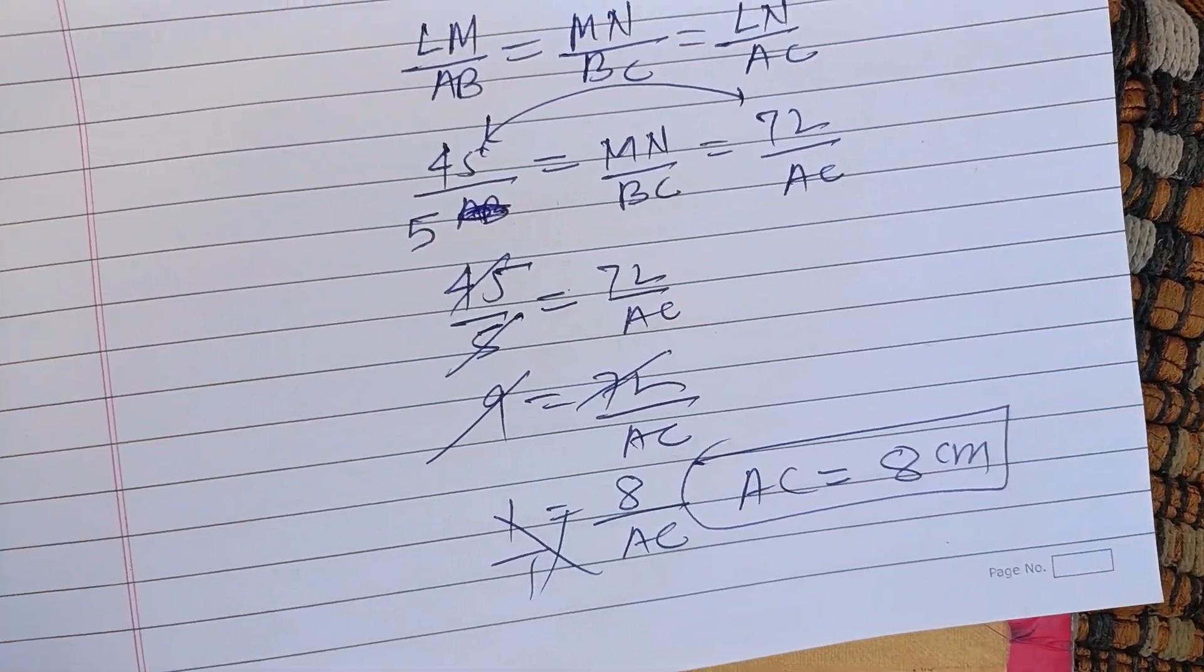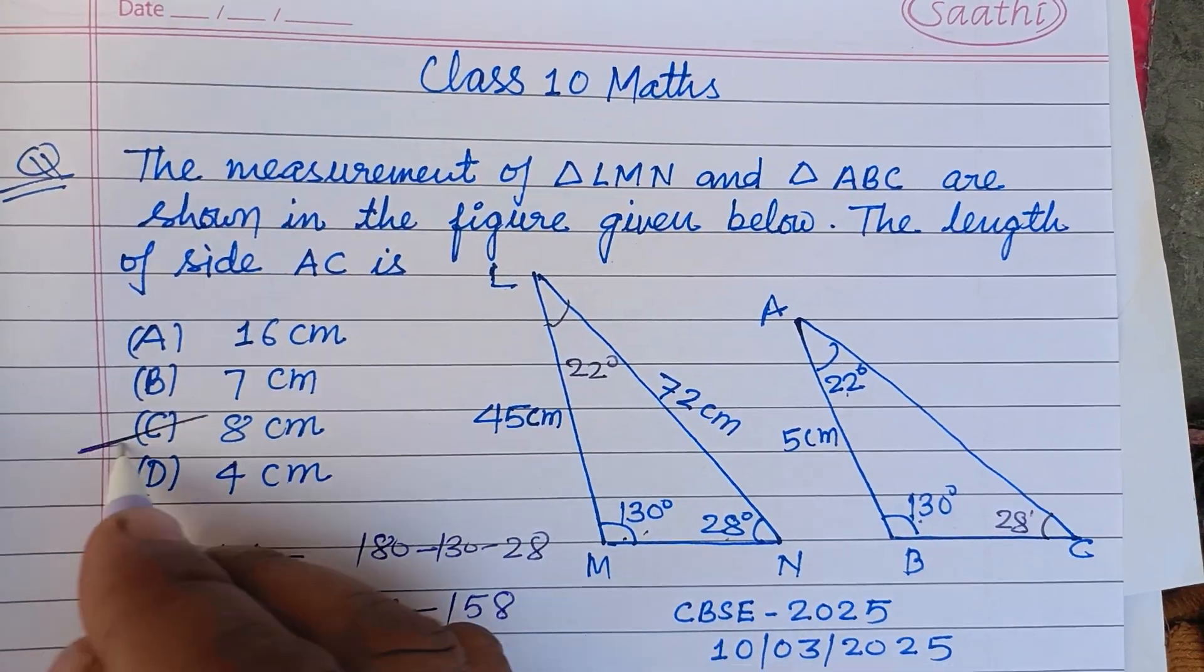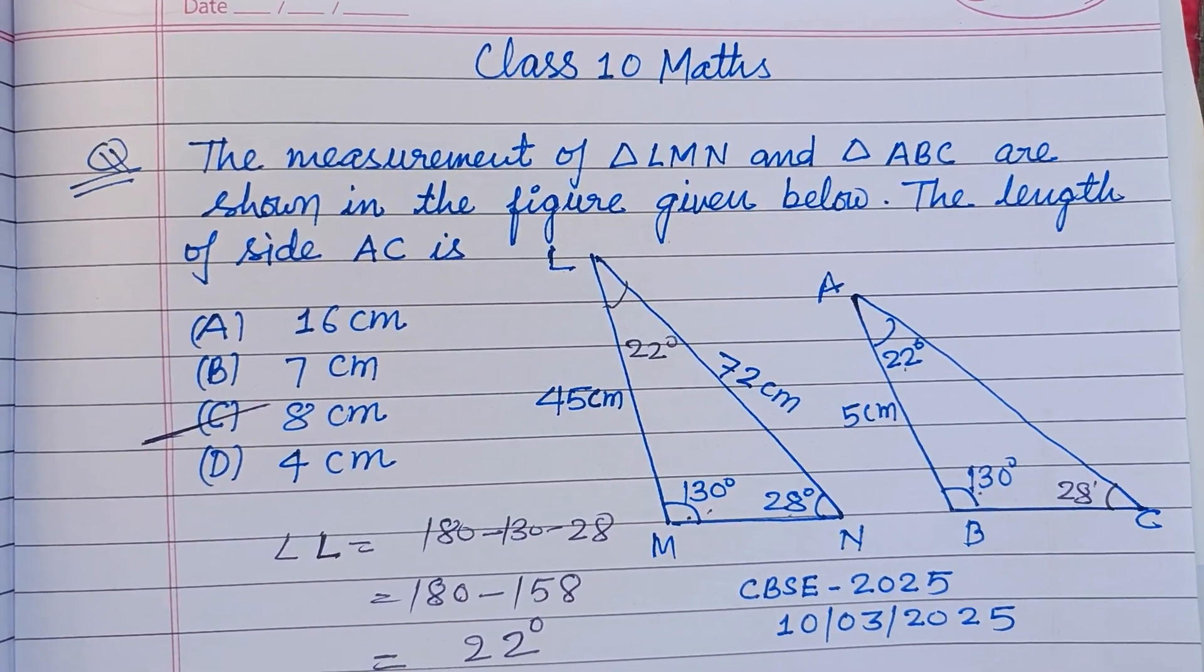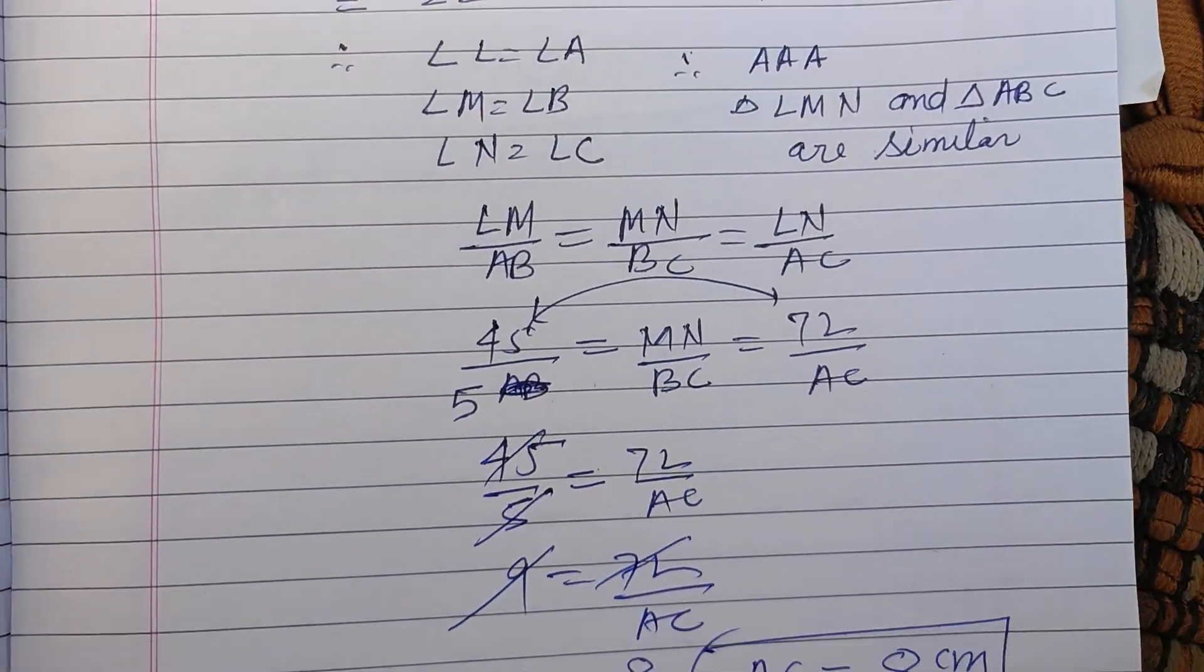AC is 8 centimeters. Therefore C is the correct option for this question. I hope you got it. Please like the video, subscribe to the channel, thanks for watching.